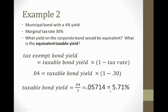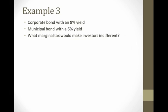In doing that, we get 5.71%. So again, holding other characteristics constant, investors should be indifferent between a muni that yields 4% and a corporate that yields 5.71% if they have a marginal tax rate of 30%.